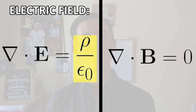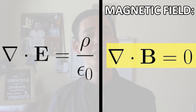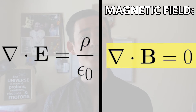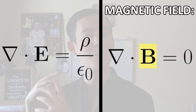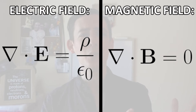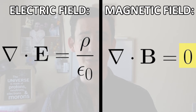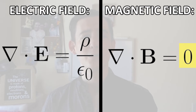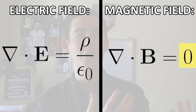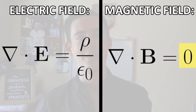The corresponding equation for magnetism is this one, which we can clearly see is for magnets because it's got a big capital B in it for magnetism. The important thing here is that the right hand side of this equation is zero, and this is because we've never seen a magnetic monopole, so we don't describe them in our equations of the universe.